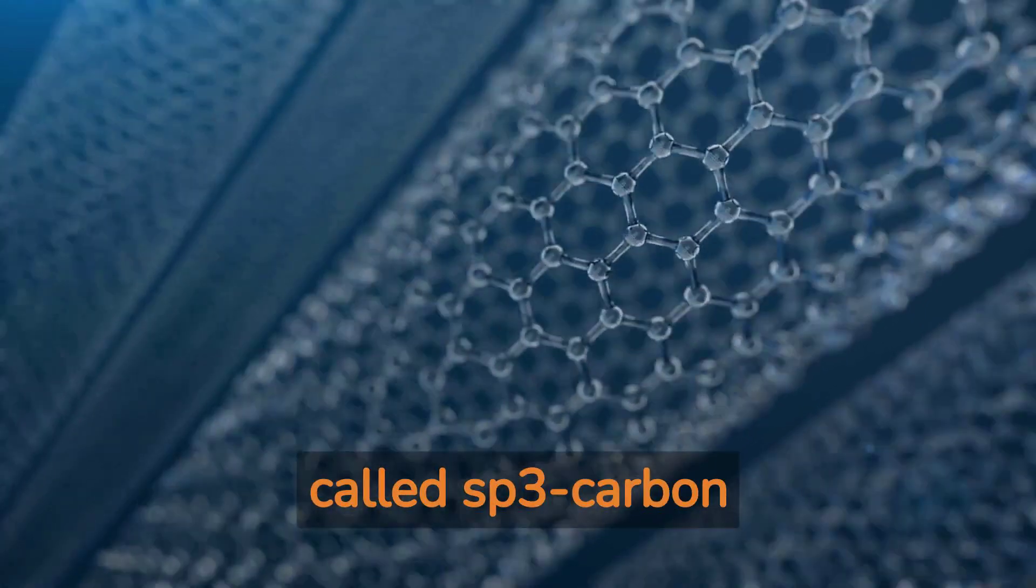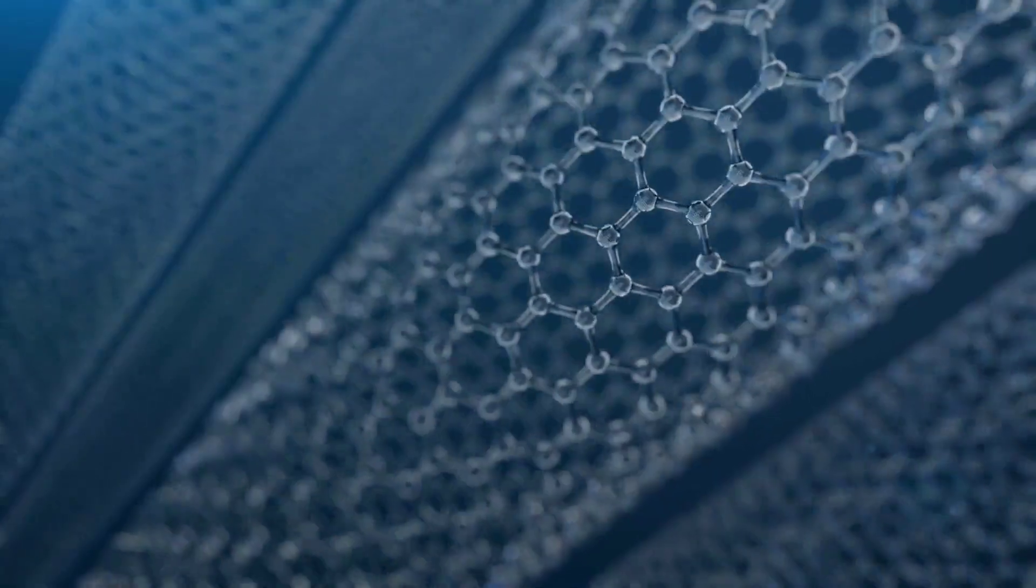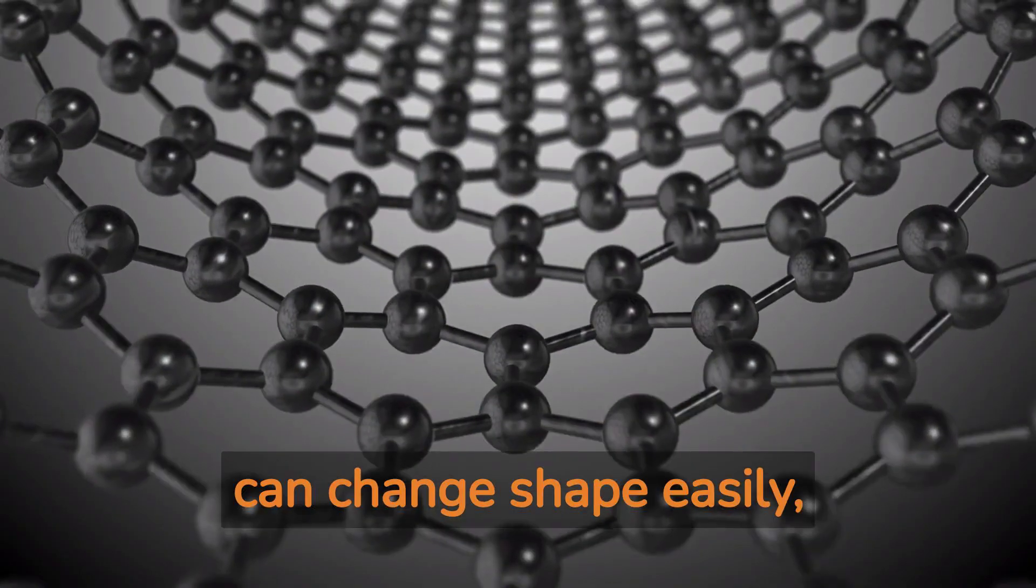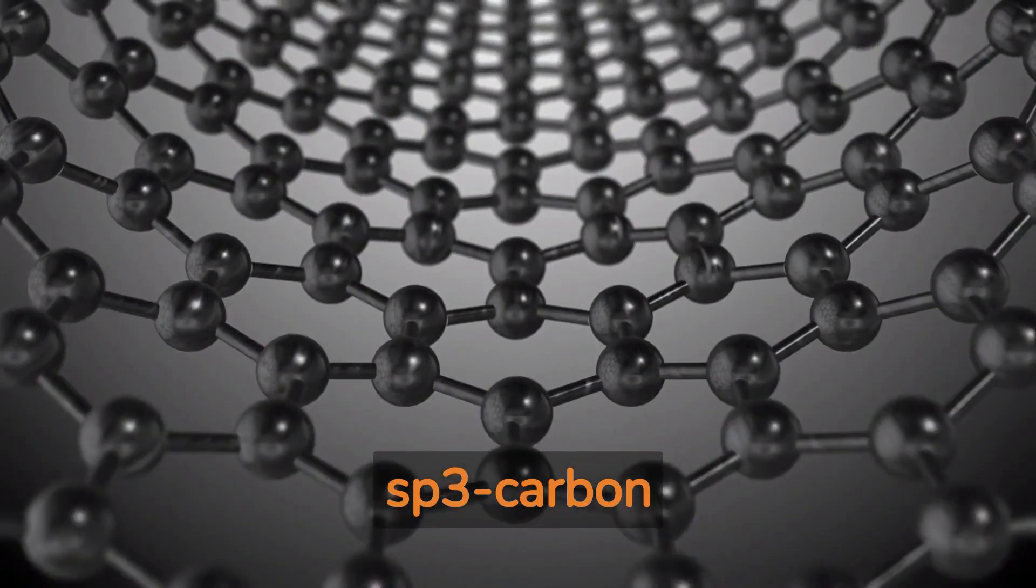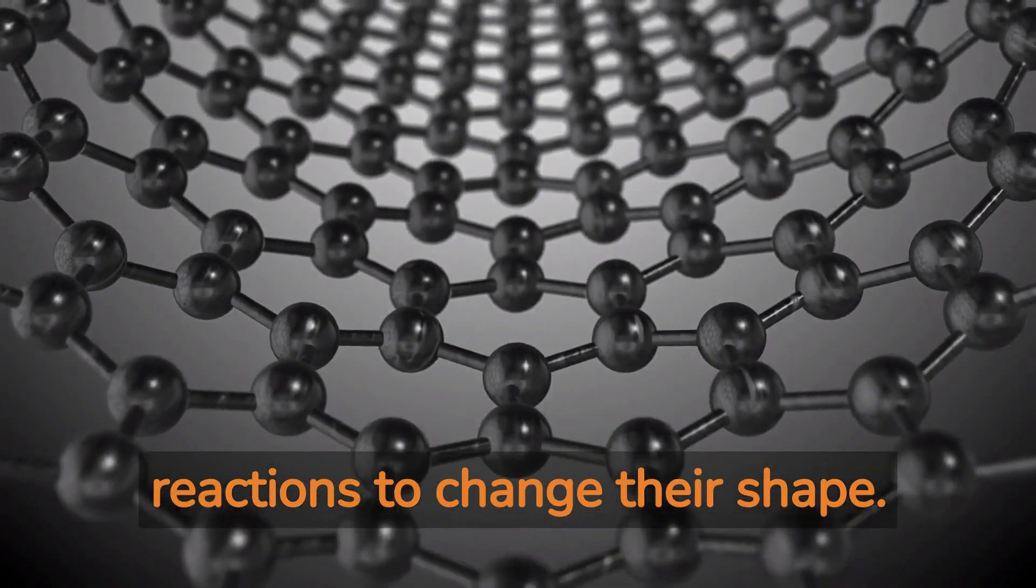Carbon structures called sp3-carbon centers are important for making chiral molecules. Unlike other structures that can change shape easily, sp3-carbon centers are usually fixed and need special reactions to change their shape.